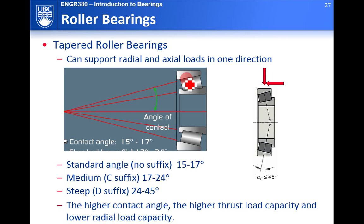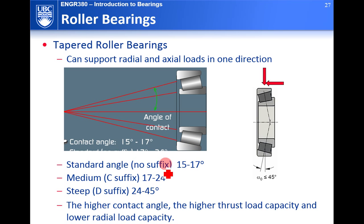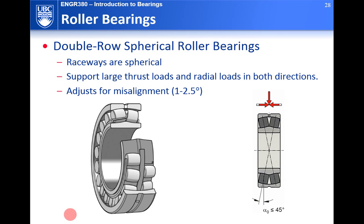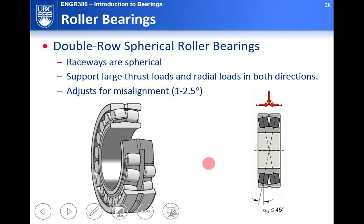The tapered roller bearing has rollers with a slight taper angle, giving it a contact angle concept. Lines drawn through the roller axes converge to a single point, and that angle is called the angle of contact — typically between 15° and 45°. Standard is 15–17°, medium is 17–24°, and steep is 24–45°. A higher contact angle gives higher thrust load capacity but lower radial load capacity. Like angular contact ball bearings, tapered roller bearings can only take thrust in one direction. The double row spherical roller bearing can take thrust in both directions and accommodates misalignment up to 1–2.5 degrees.